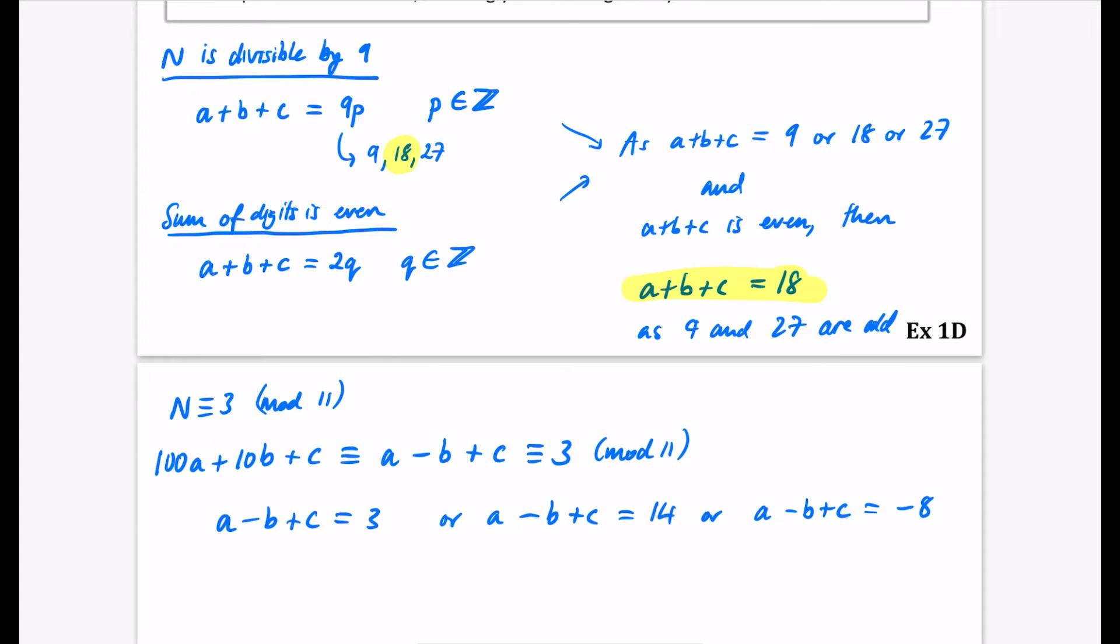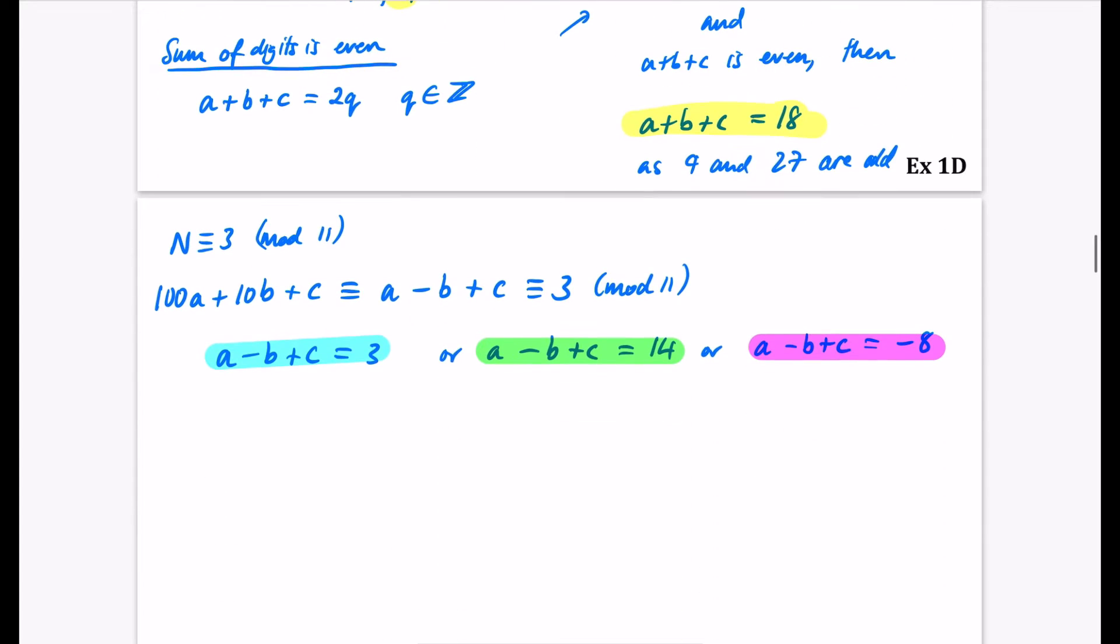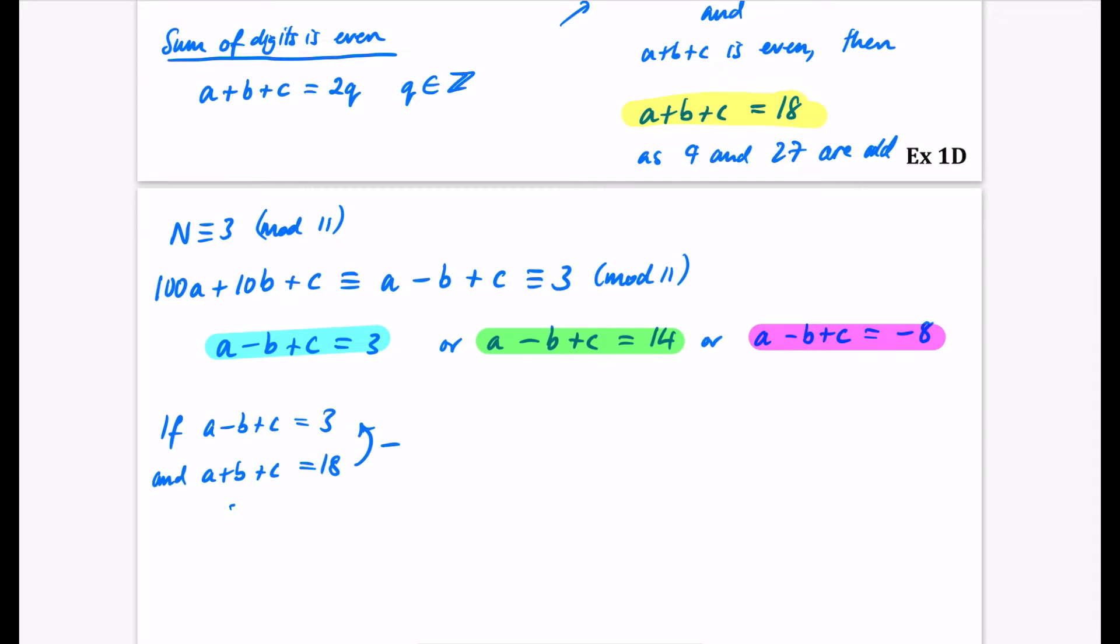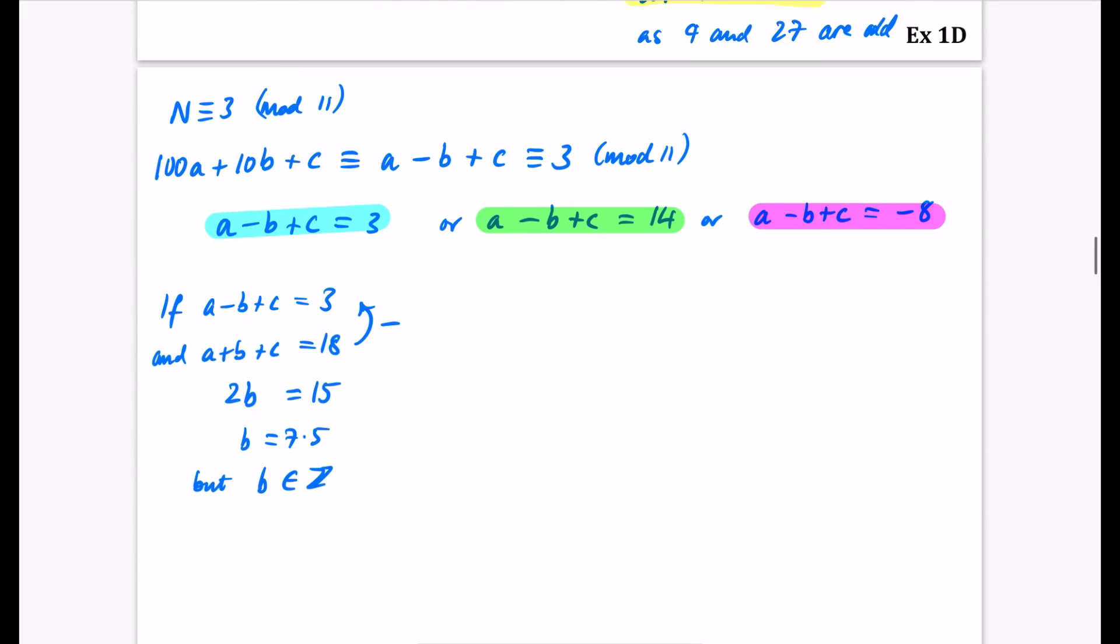So now we're going to have a look at these as different pairs of simultaneous equations. So if A minus B plus C equals 3 and A plus B plus C equals 18, we can solve these simultaneously. If I do them subtracting, the bottom take away the top, I'll get A minus A cancels, B minus minus B is 2B and C minus C is 0. 18 minus 3 is 15. So this gives us B is equal to 7.5. But B is a member of the integers because you remember at the beginning we said that A, B and C are digits. So this one isn't going to work at all.